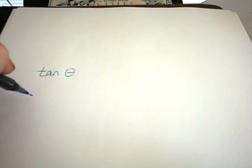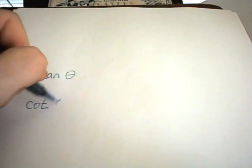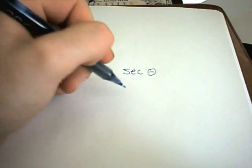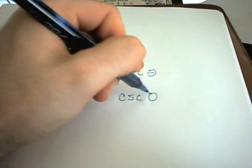So our other trig functions are the following. We have tangent of theta, and likewise we have cotangent of theta. We also have secant of theta, and cosecant of theta.